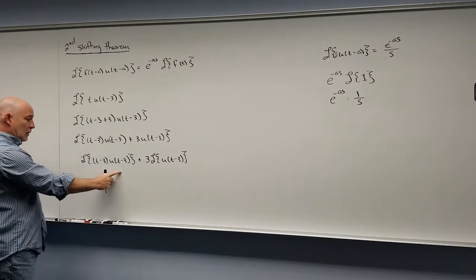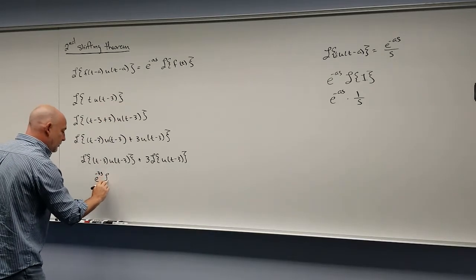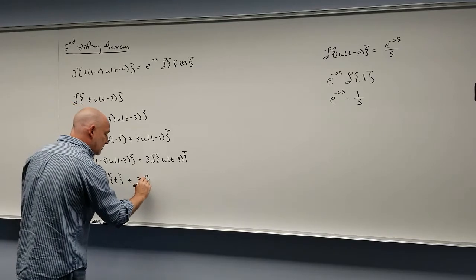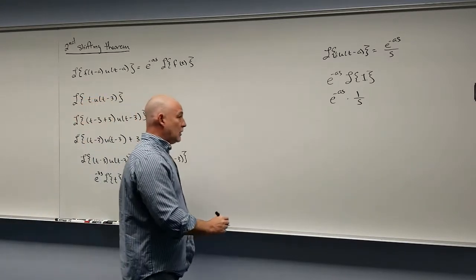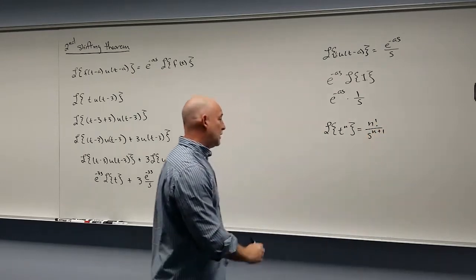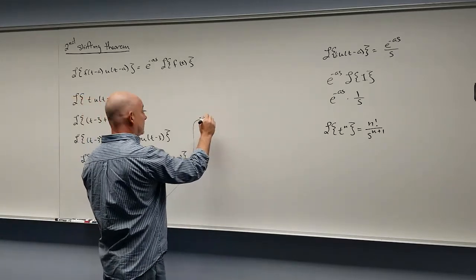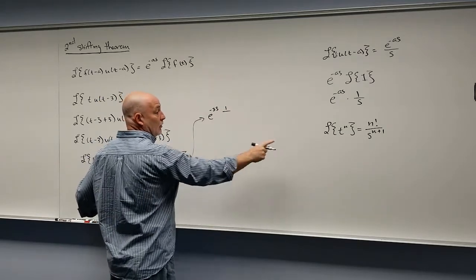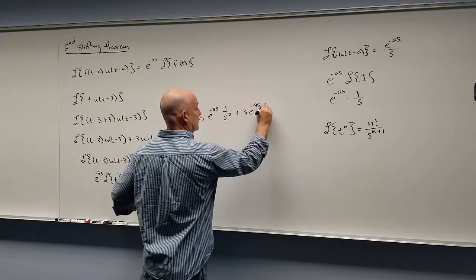For the first piece, it fits the second shifting theorem exactly, so we get e^(-3s) times the Laplace transform of t, plus 3 times e^(-3s)/s. We know the Laplace transform of t^n is n factorial over s^(n+1), so with n=1, the Laplace transform of t is 1!/s² = 1/s². So the full result is e^(-3s)·(1/s²) + 3e^(-3s)·(1/s).